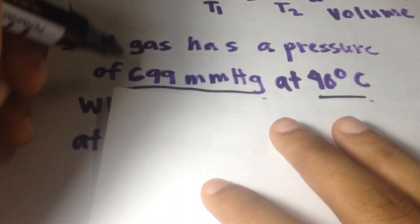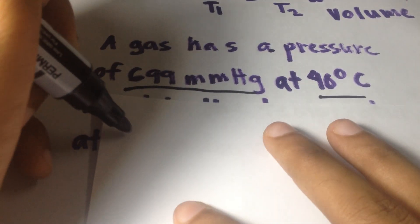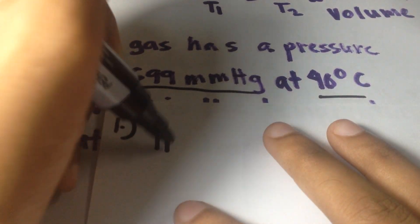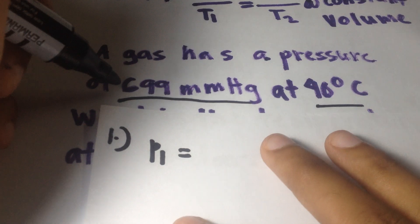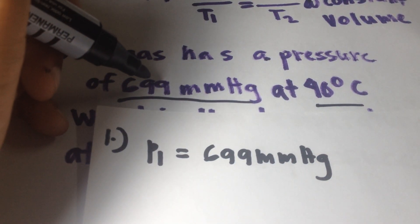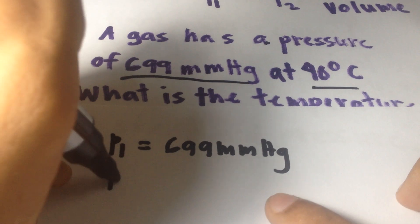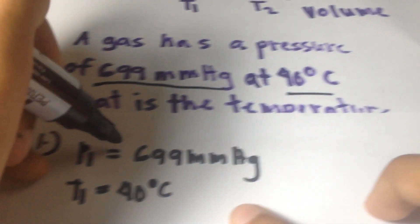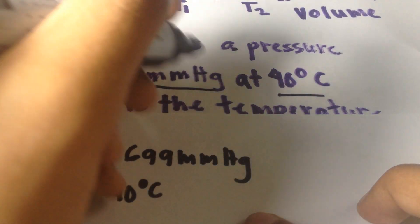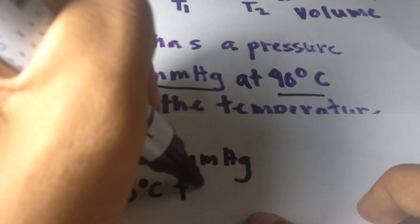Let's begin. For P1, we have 699 mmHg. And the temperature is 40 degrees Celsius, which is temperature 1: 40 degrees Celsius plus 273.15 Kelvin, which is 313.15 Kelvin.